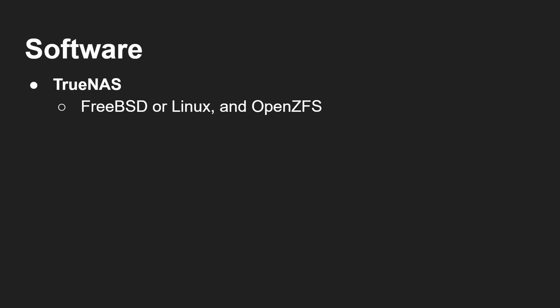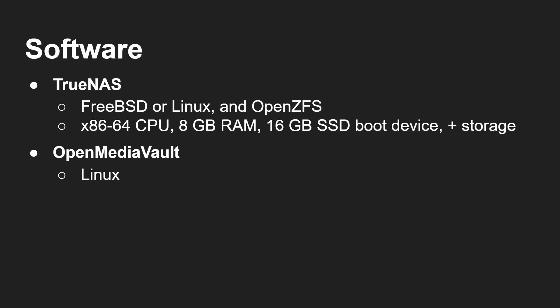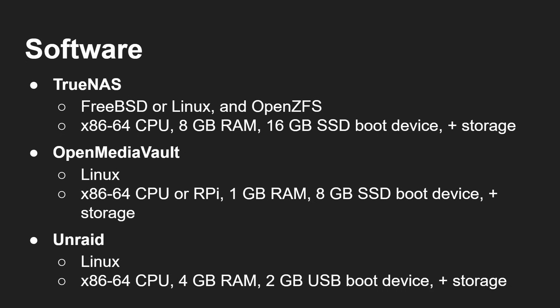The software options we're looking at today are: TrueNAS, which is based on FreeBSD or Linux and uses OpenZFS — requires a 64-bit x86 CPU, 8 gigs of RAM, and at least a 16 gigabyte boot device; OpenMediaVault, which is Linux-based and needs a 64-bit CPU with just 1 gigabyte of RAM, or a Raspberry Pi, with an 8 gig boot device; and Unraid, which is Linux-based, needs a 64-bit CPU with 4 gigs of RAM, and a 2 gigabyte boot device.